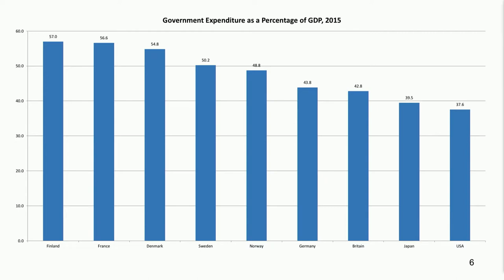Compared to other countries, government spending relative to GDP is not high in the U.S. Finland has 57 percent total government spending relative to GDP, France 56.6 percent, Japan just under 40 percent. The U.S. by this measure for that year was 37.6 percent. The U.S. does not have a big government relative to the size of the economy by this measure.